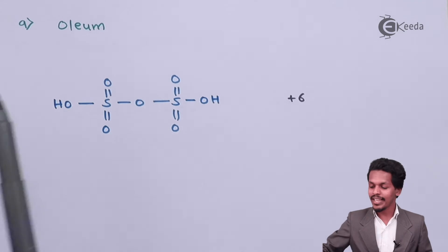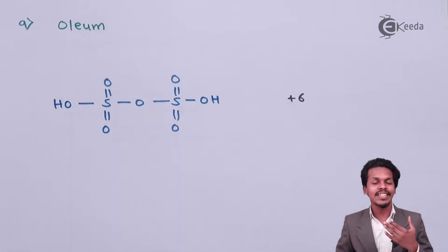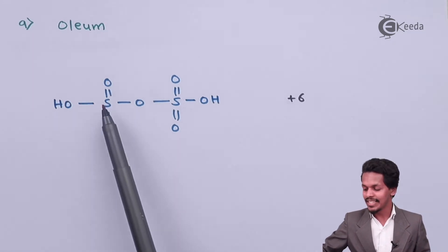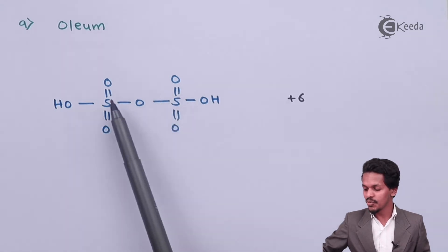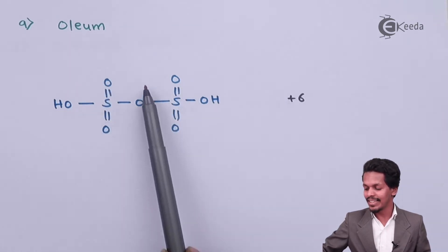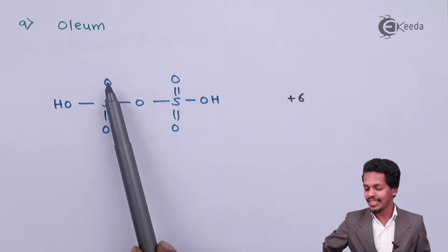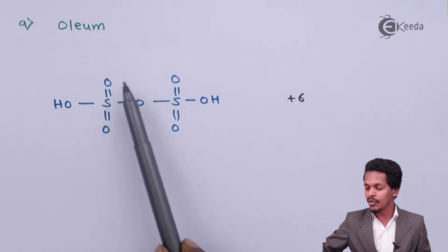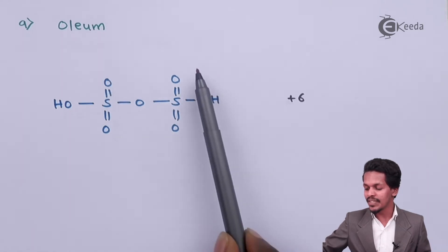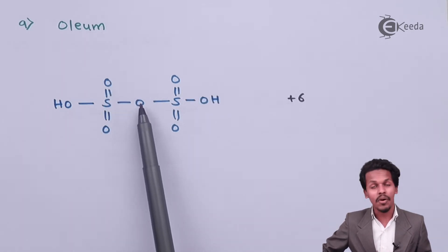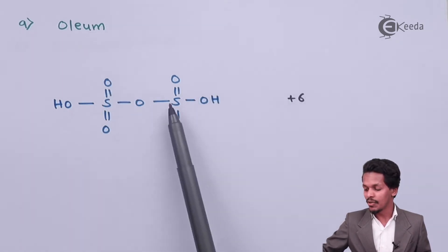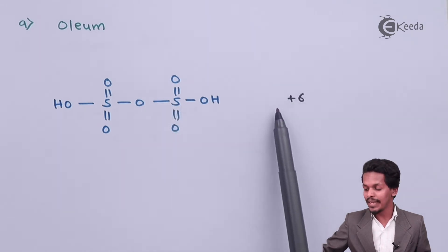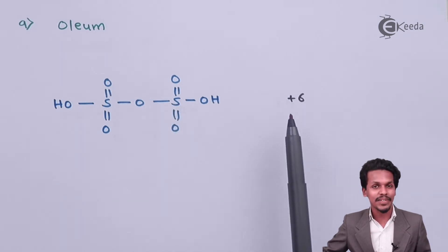The next is oleum, with formula H₂S₂O₇. Similar groups are present on both sides and are connected via an oxygen atom. The oxidation state of sulfur is +6.